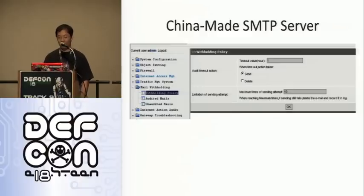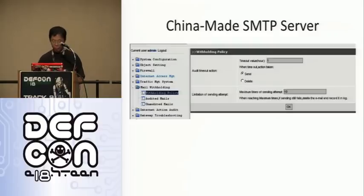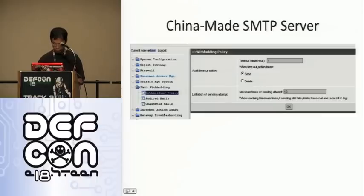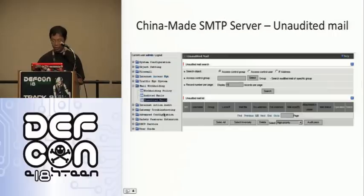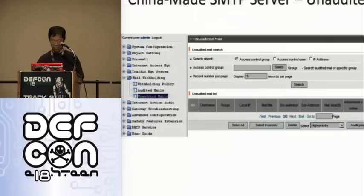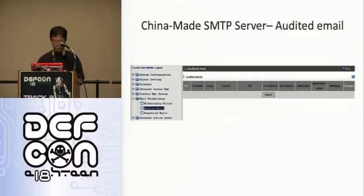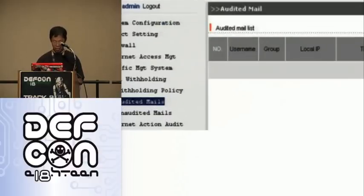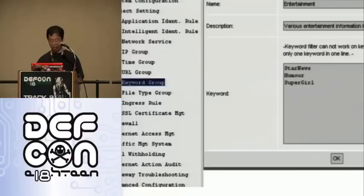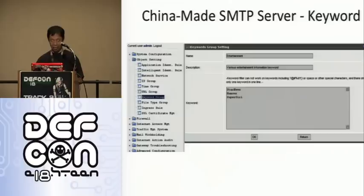Also talking about China-made products: the SMTP server has a withholding policy. You can audit emails and get usernames. The administrator can audit emails and retrieve usernames with very good keyword filtering — you can put any keywords you like. This was my first time to find an SMTP server with such powerful censorship capability.